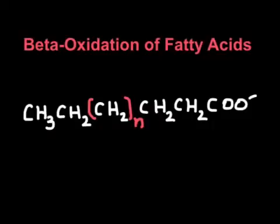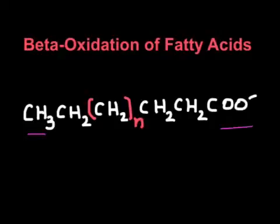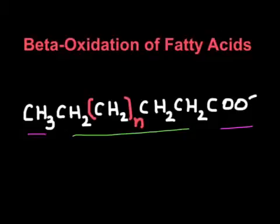In beta oxidation of fatty acids, we generally use even-number carbon fatty acids for explanation. Such a fatty acid has a methyl group, a carboxyl group, and in between a hydrocarbon chain that can have n number of carbon atoms. This is the general structure of an even-number carbon fatty acid.